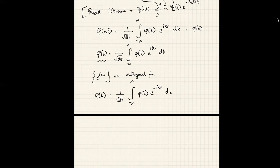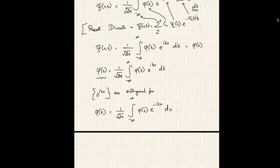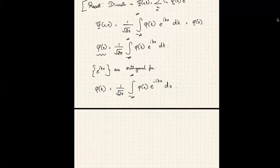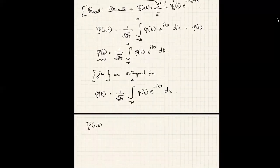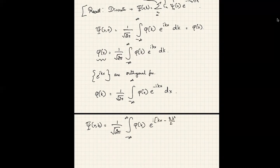So exactly like in the discrete case, there is a simple program for finding the expansion coefficients φ(k). I am now ready to write down the most general solution for the free particle. The most general solution is: Ψ(x,t) = (1/√(2π)) ∫_{−∞}^{∞} φ(k) e^(i(kx − ħk²/2m · t)) dk.